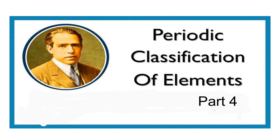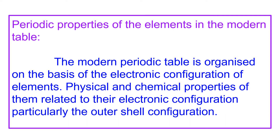Hello students, welcome to grade 10 chemistry class. The topic is periodic classification of elements, part 4. In today's class, you are going to learn about the periodic properties of the elements in the modern periodic table. The modern periodic table was proposed by Moseley and is based on the electronic configuration of the elements. Now let's see how the periodic properties of the elements change in this modern periodic table.